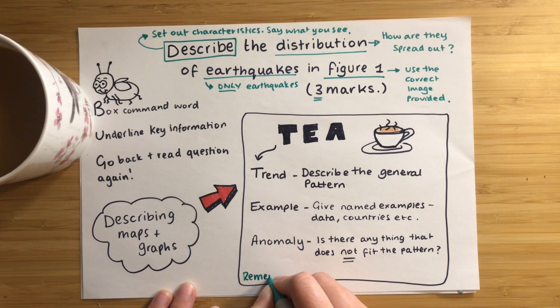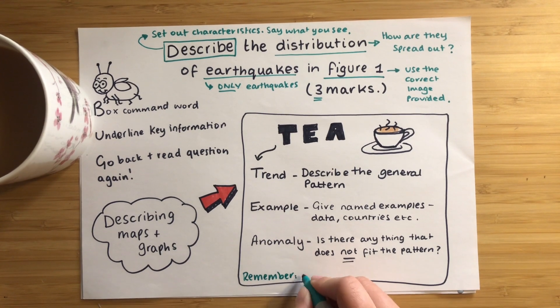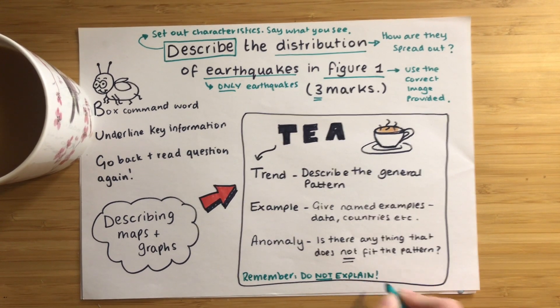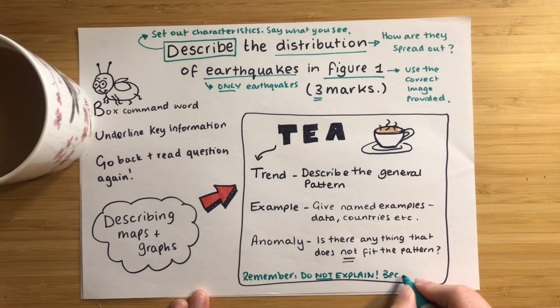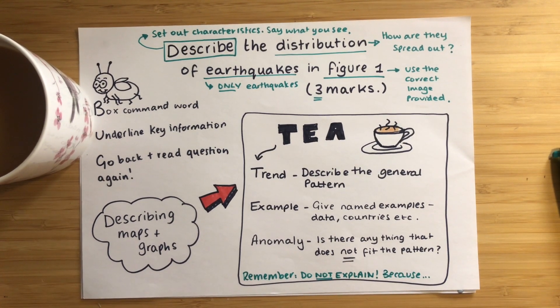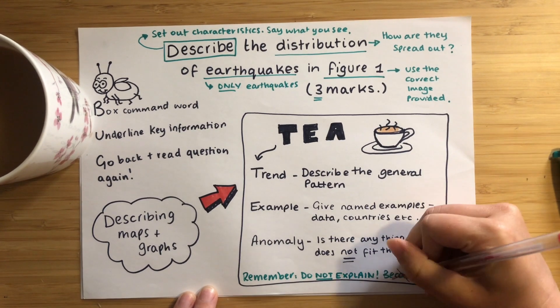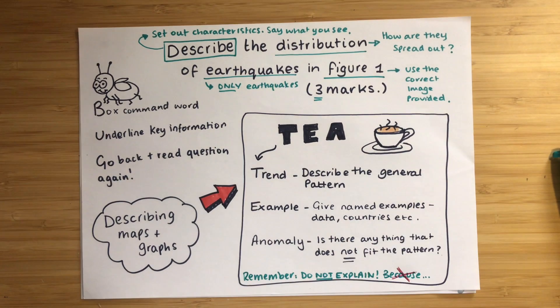The most important thing to remember is that it is a describe question, so you must not explain. If you have written the word 'because' in your answer you're going wrong. We need to avoid saying why earthquakes are located there. Even if everything you write is correct, you won't be answering the question and therefore you're not going to get the marks. They just want you to describe what you can see.